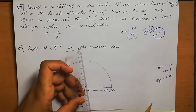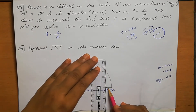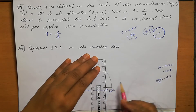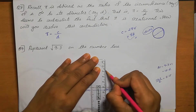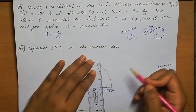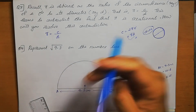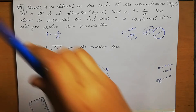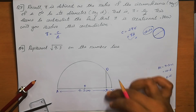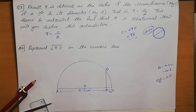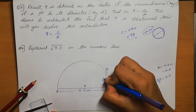From point B, draw a perpendicular that intersects the semi-circle at point D. The length BD is actually equal to root 9.3. We need to represent this measurement on the number line.